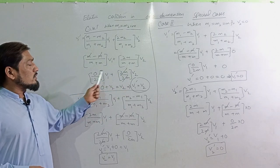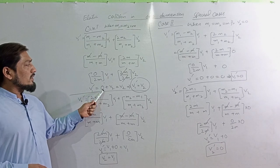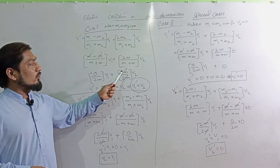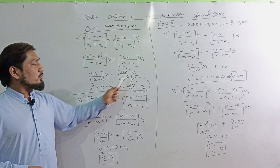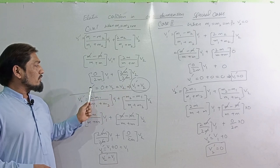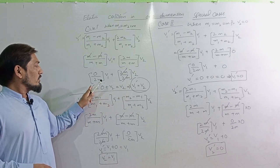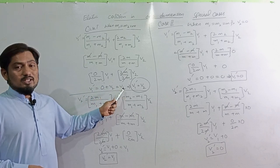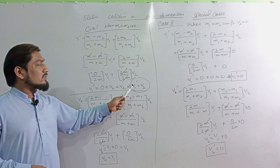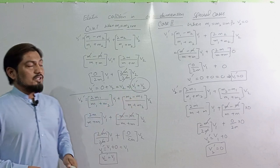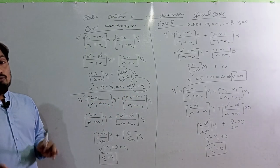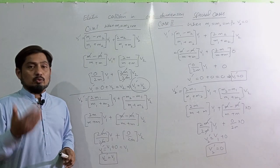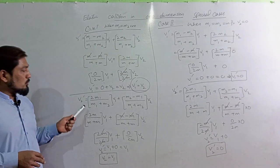This equation becomes V1 over 2 plus 0. V2 is over 0. In this equation, V1' equals V2. The first ball will stop after collision, and the second ball will move.